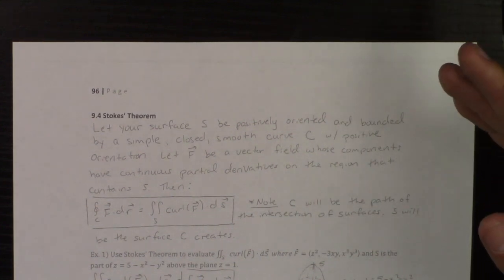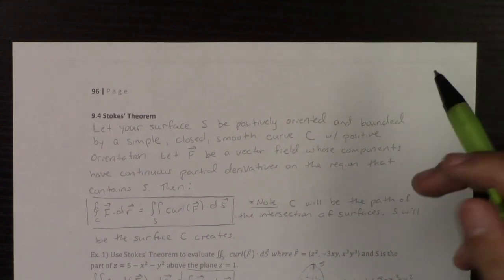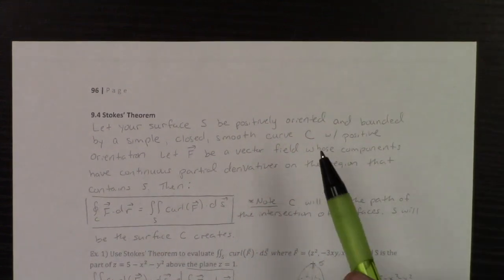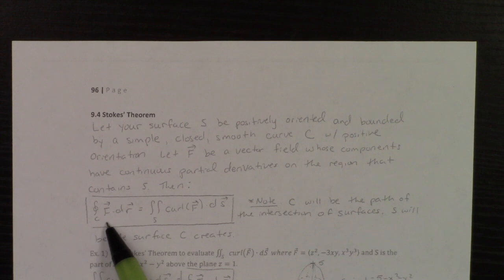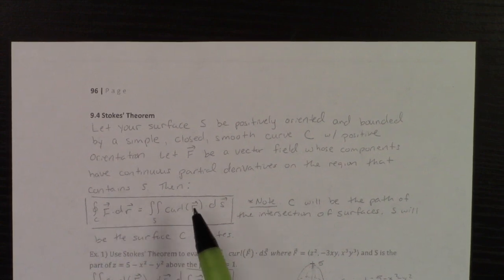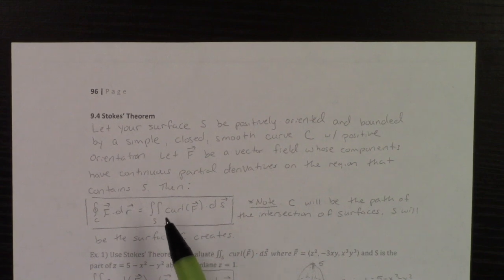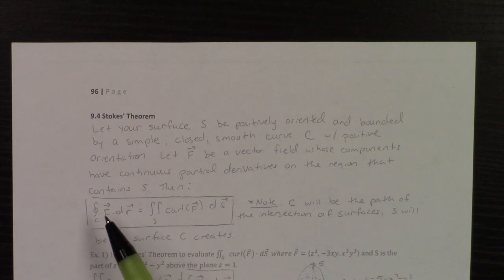But normally they're going to tell you to use Stokes' Theorem to evaluate whatever. So if it asks you to use Stokes' Theorem to evaluate the line integral, you are going to do the double. But if it says use Stokes' Theorem to do the double integral, you are going to do the single.